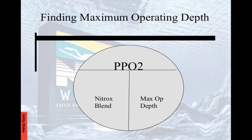To foreshadow some of the other things we'll be doing with the wheel: any time we move from the top, where we have partial pressure of O2, and move down, we always divide. If we're going to move from left to right or right to left, we always multiply. You'll see that in some of the other modules we're going to cover.